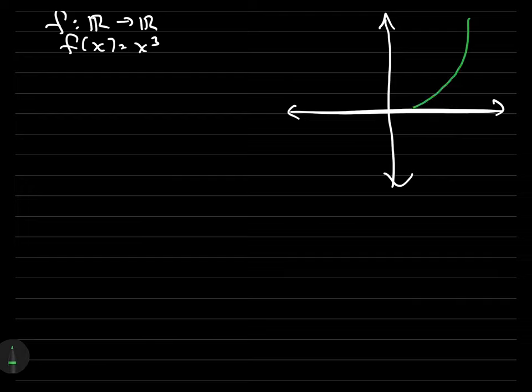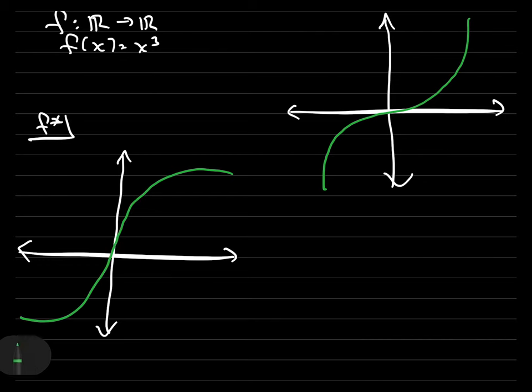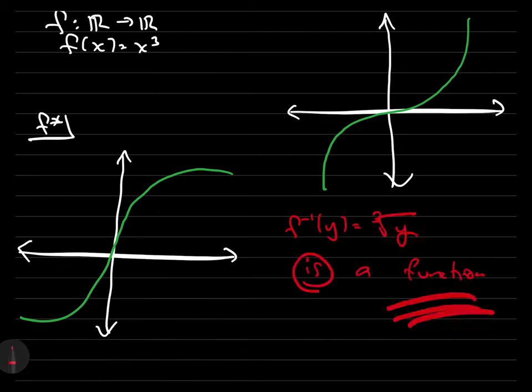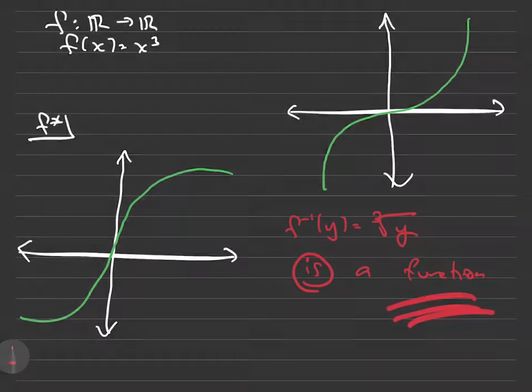Let's consider a different example. What about F from the reals to the reals, where F(x) is x cubed. F* is, we just flip the graph of F across the line y equals x, but notice F* of y equals the cube root of y is a perfectly valid function.